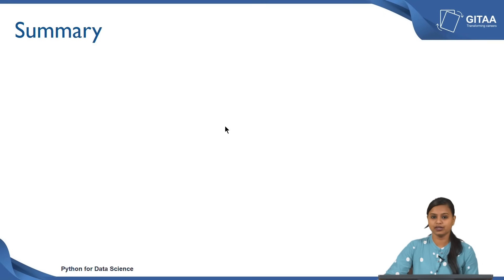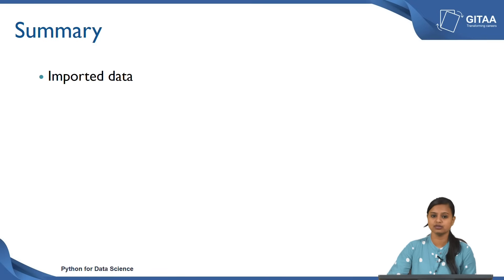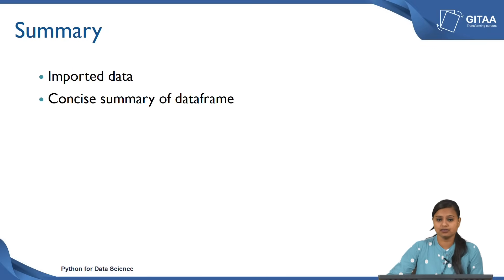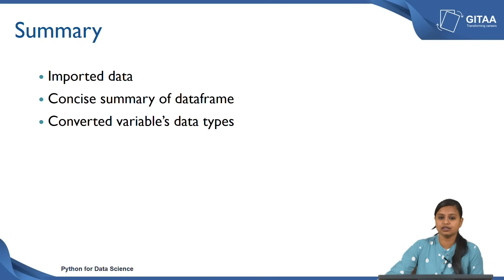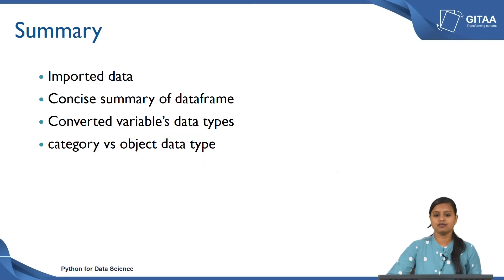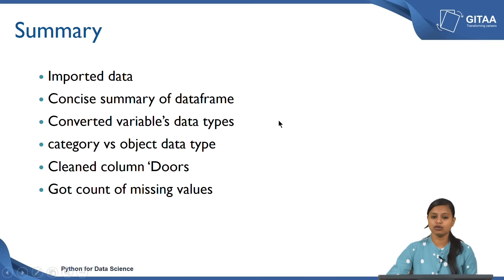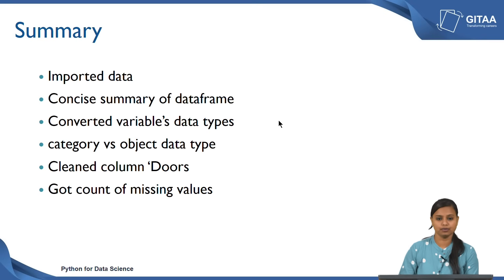To summarize this lecture: we imported the data considering all other forms of missing values as NaN. We got the concise summary to verify the difference after replacing special characters with NaN. We converted variables to expected data types and examined the impact of category versus object data type. We cleaned the doors column by replacing string values with numbers, and we now have an idea of how many missing values are present in each column. In the upcoming lectures we will see how to deal with missing values by imputing them.